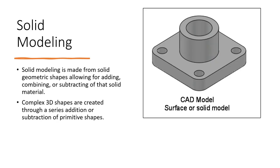Solid modeling itself is really what we've been focusing on for the most part in our courses here with SolidWorks and such. This is where you make a solid model in three-dimensional space—a solid geometric shape that allows you to add or combine materials through extrusions or subtract solid material through cuts. Complex 3D shapes are created through a series of additions or subtractions.